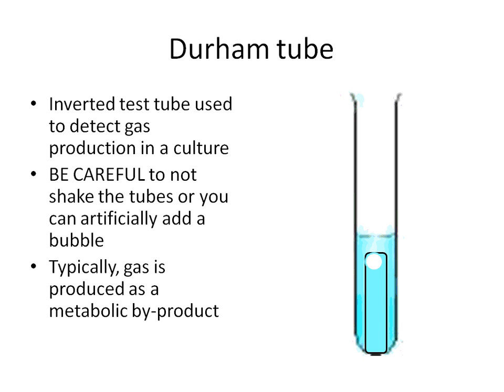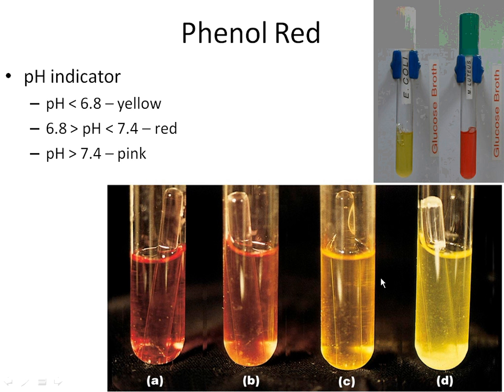We also add a second component to the media called a Durham tube. The Durham tube is a very small, upside-down test tube inside your large test tube. This upside-down tube acts to detect gas production. If you recall from our lecture on fermentation, carbon dioxide is often a byproduct of fermentation. When gas is produced in the liquid, it becomes an air bubble. The upside-down Durham tube allows those air bubbles to get trapped so you can see them when you come back the next day.